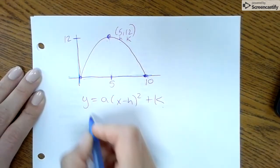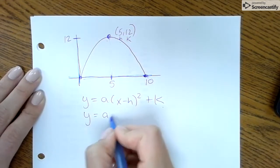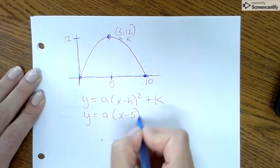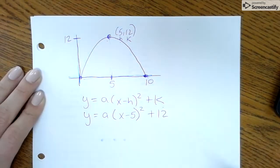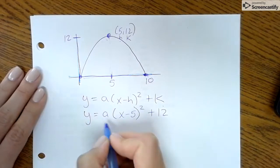So this is my graphing form, and then I'm going to fill in my h and k. So y equals a times (x minus my h value) and then plus my k value. Now the only thing that we have to figure out still is a.